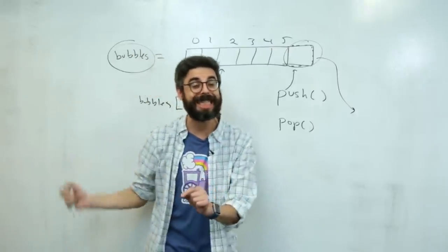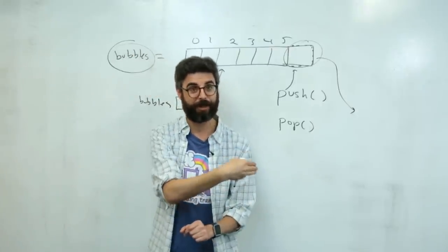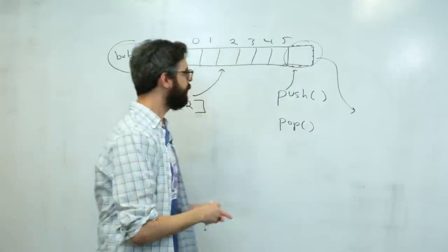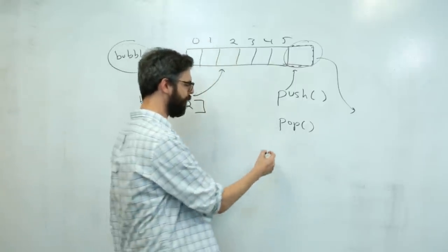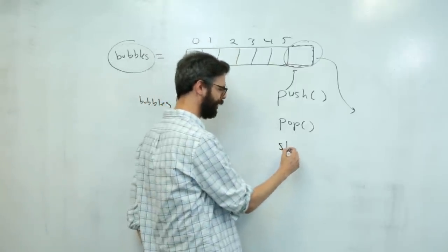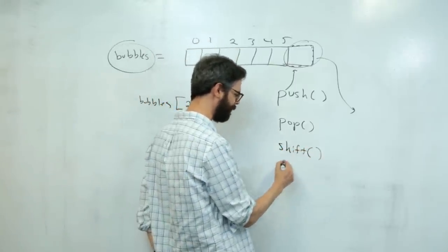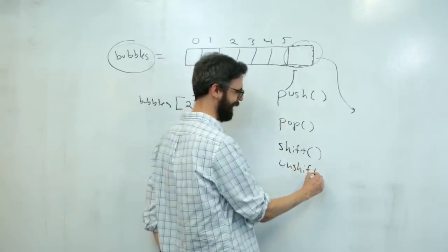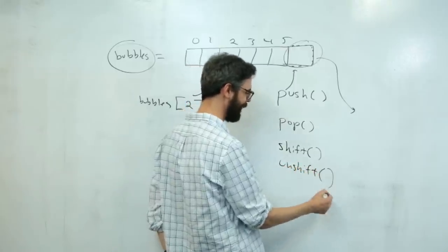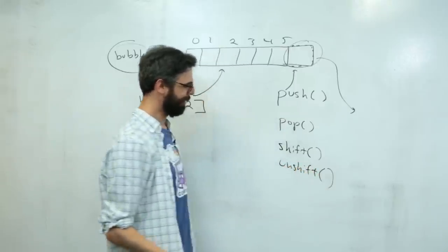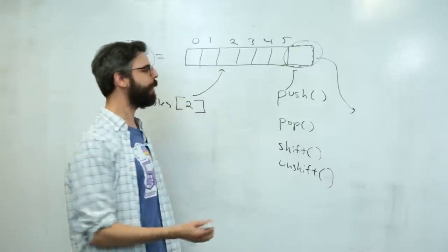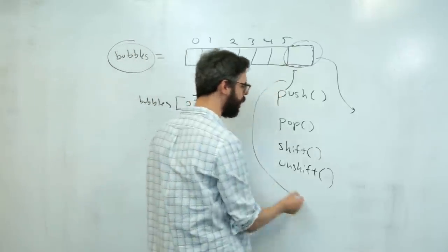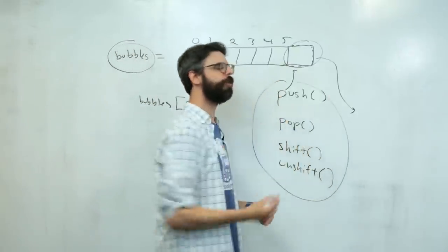So if I want to always delete the last element of the array I could use the pop function. There are lots of other functions — there's shift, and I think there's even unshift. Where do these functions come from?